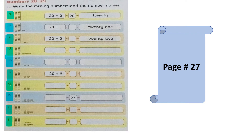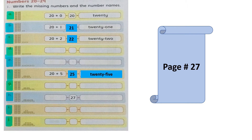20 plus 1 makes 21. In numbers it is called T-W-E-N-T-Y, 20, hyphen or space, then O-N-E, 1 — twenty-one. In the same way you will complete the page till 29. I have solved some of the columns for you so that it makes it easier for you to solve this page.